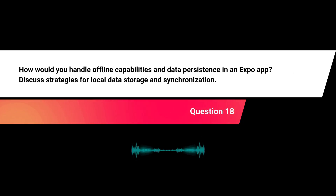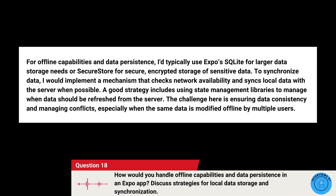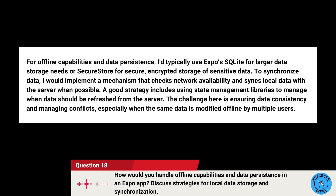How would you handle offline capabilities and data persistence in an Expo app? For offline capabilities and data persistence, I typically use Expo SQLite for larger data storage needs or Secure Store for secure encrypted storage of sensitive data. To synchronize data, I would implement a mechanism that checks network availability and syncs local data with the server when possible. A good strategy includes using state management libraries to manage when data should be refreshed from the server. The main challenge is ensuring data consistency and managing conflicts, especially when the same data is modified offline by multiple users.